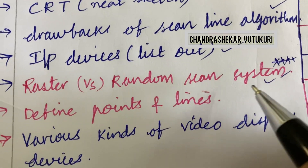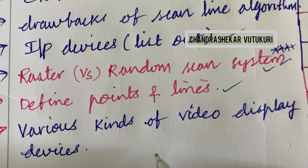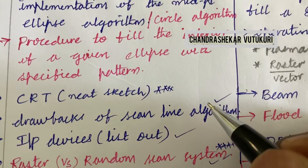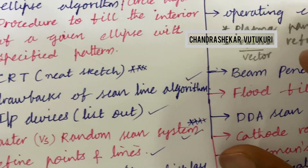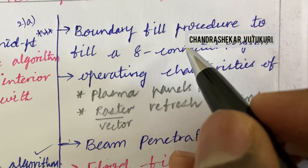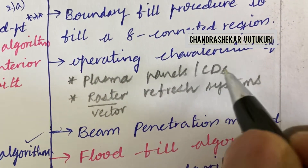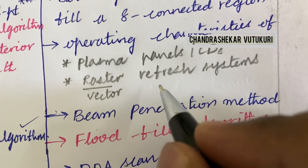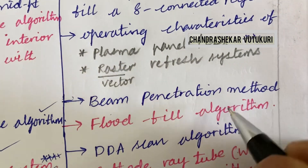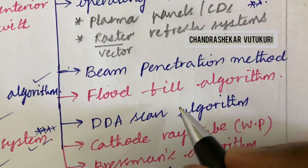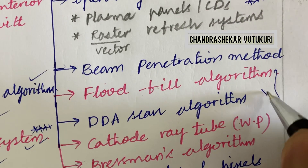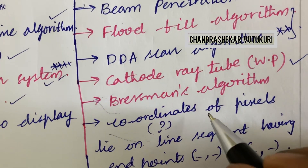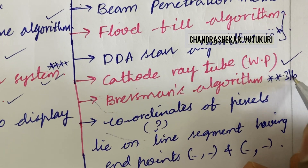Define points and lines is a short question. Various kinds of video display devices may be a 2D question this time in the question paper, covering 1A, 2A, and 2D. For 3A and 3D: boundary fill procedure to fill an 8-connected region, operating characteristics of plasma panels, CDS raster refresh systems, and vector refresh systems may be a long question. Beam penetration method, flood fill algorithm, and their differences is said to be a topmost question. Cathode ray tube and its working principle — Bresenham's algorithm is said to be a 3D question.